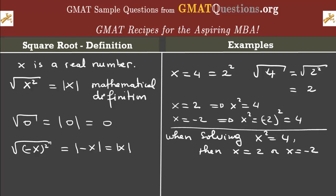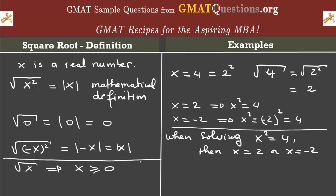Inside the root, you cannot have a negative number. If you're given the root of x without the square, by definition, x inside the radical — this is called the radicand — must be positive or 0. You cannot take the square root of a negative number. Note that I'm not talking about the cube root or odd roots, where you can have a negative number — for example, the cube root of negative 8. For the square root and any even root, the radicand cannot be negative; it has to be 0 or a positive number.